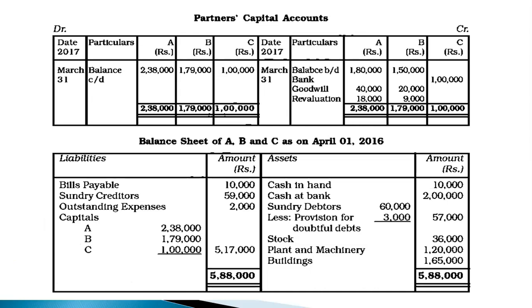In Exercise 1, we learned how to pass journal entries and in which ratio items are distributed. Remember: revaluation profit or loss is distributed in the old ratio, and premium for goodwill brought by a new partner is distributed in the sacrificing ratio. Here the sacrificing ratio was not given, so we used the old ratio.